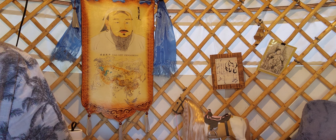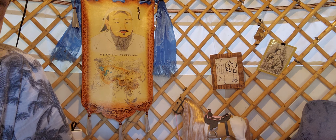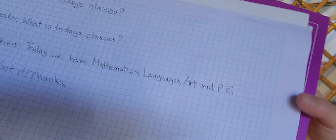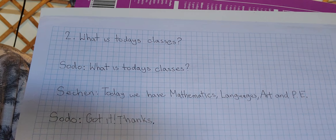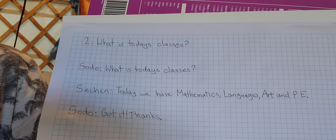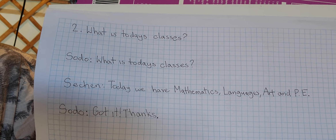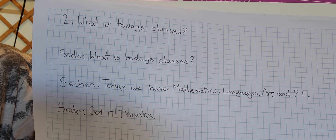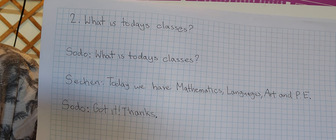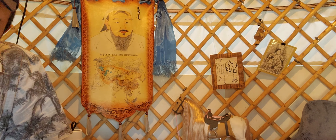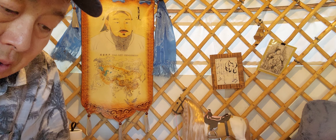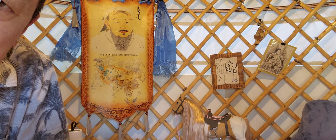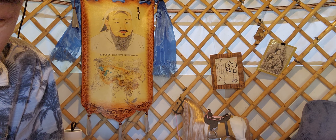It's Nara's turn. The English menu is what lesson two is — what is today's classes? So Soto says, what is today's classes? So Chen says, today we have mathematics, languages, art, and PE. And Soto says, got it, thanks. So that is the content of this lesson. We have done this once, but just in case you're missing, go through it quickly.